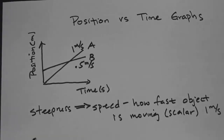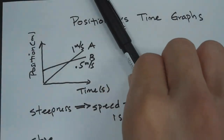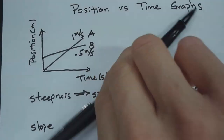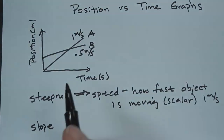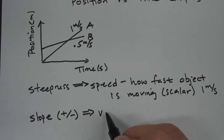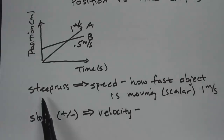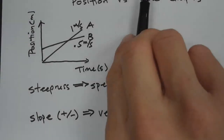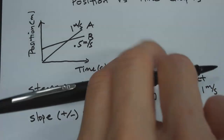We can also think about slope, and I want to differentiate steepness from slope here. Steepness — it could be steep this way, or it could be steep this way, but it doesn't make it positive or negative. When we want to differentiate between slopes, we're going to be talking about positive or negative slope. Slope represents velocity. Steepness represents speed. This would be a positive slope, and this would be a negative slope.